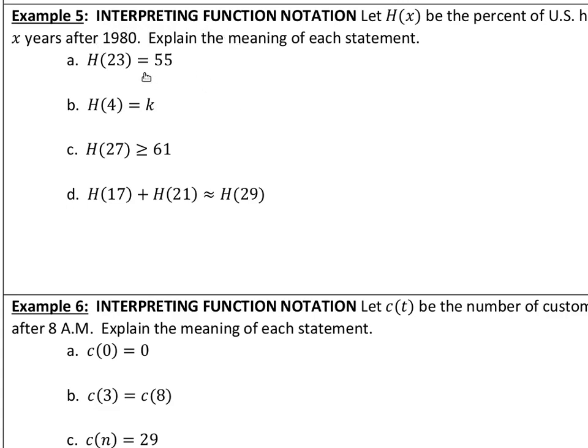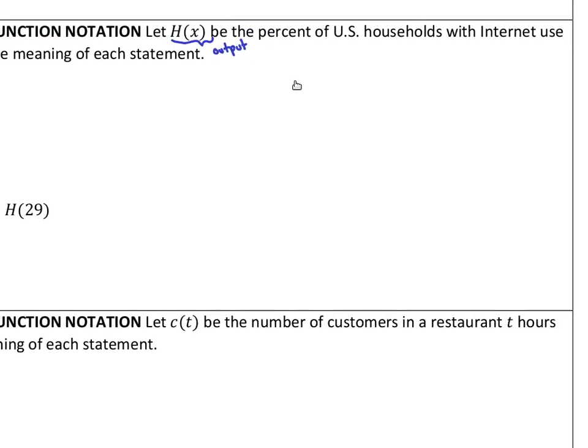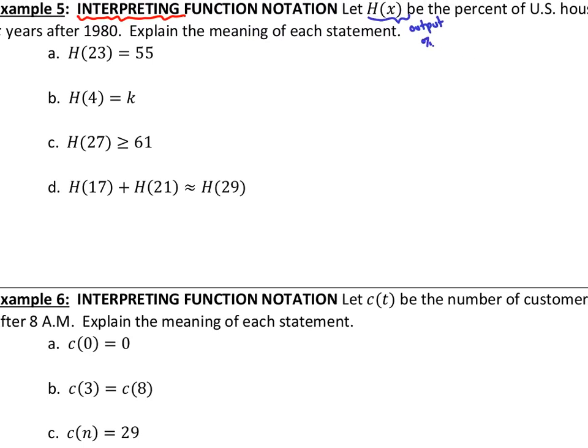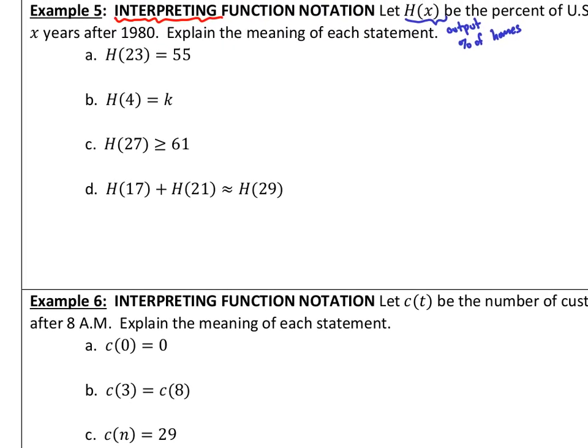So, again, remember, interpreting, they're not telling us to solve anything. We're just trying to put words on these numbers. So, again, let's just figure out what's the input, what's the output, what labels do those mean? So, let H of X, so this is our output. It's the output, it's the percent of U.S. households, I believe with Internet access, with Internet use, X years after 1980. Okay, so the output is a percentage of homes. The input, X, squeak that onto the screen here. The input is years after 1980.